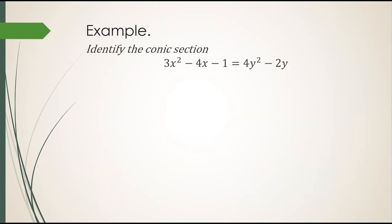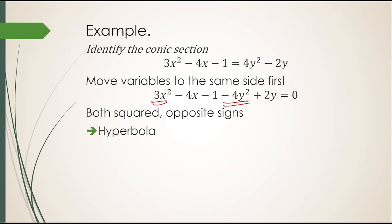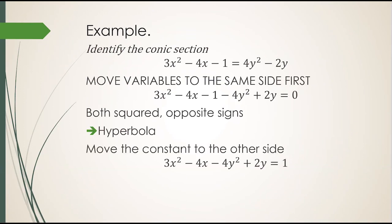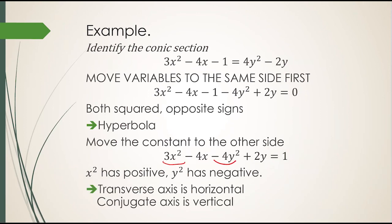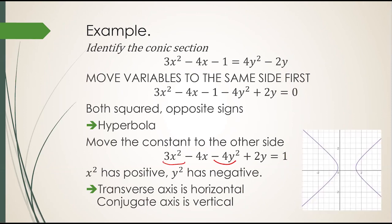Let's take an example. 3x squared minus 4x minus 1 equals 4y squared minus 2y. The variables are not on the same side, so first I move them to the same side. Both variables are squared, opposite signs, so it's a hyperbola. Now, let's say I want to know some more details about this hyperbola. I move the constant to the other side, and it's positive, so I'm good. I see that x squared has a positive coefficient, and y squared has a negative coefficient. Therefore, the transverse axis is along the x direction, or horizontal, and the conjugate axis is along the y direction, or vertical. And the Desmos graph bears it out.